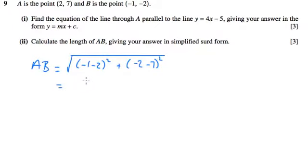Minus 1 minus 2 squared is minus 3 squared, and minus 3 squared is 9. Minus 2 take away 7 is minus 9, and minus 9 squared is going to be 81.